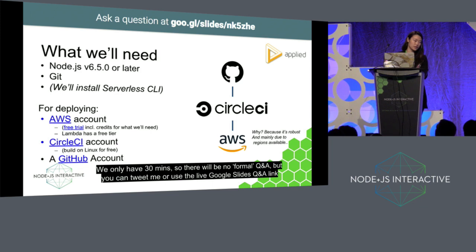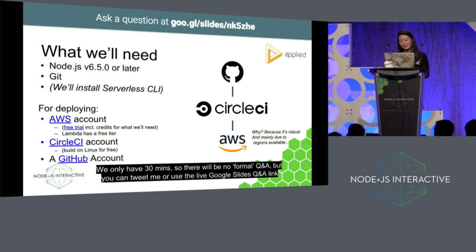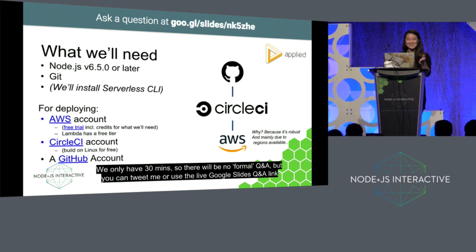What you'll need to follow along with my starter kit is Node and Git, and you'll use that to install the serverless CLI. For deploying, I've picked AWS mainly because I wanted to try Google Cloud Functions, but it's not available in London yet and my work's based in London — we have the whole GDPR thing. AWS is also very robust and mature.